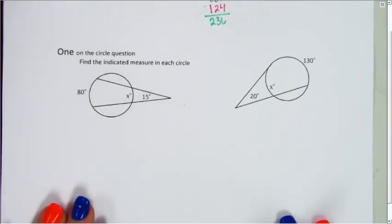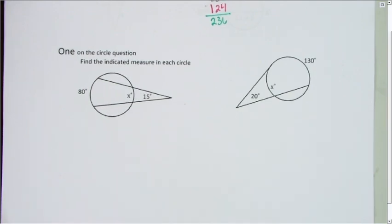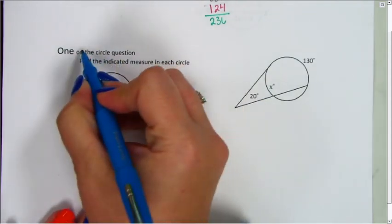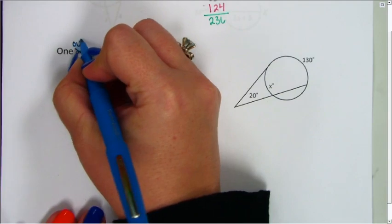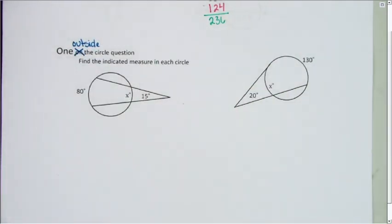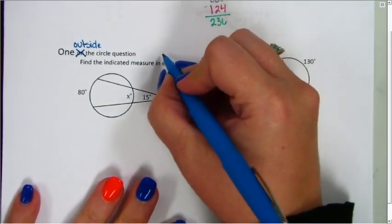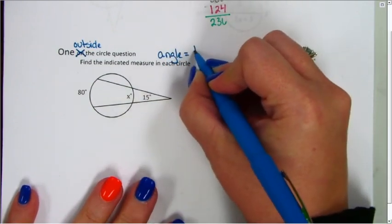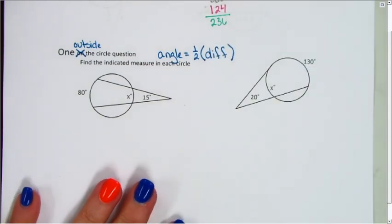On day 7, we looked at angles that are outside the circle. We will have one question on the test with an angle outside the circle. For that formula, the angle equals one half the difference of the two intercepted arcs.